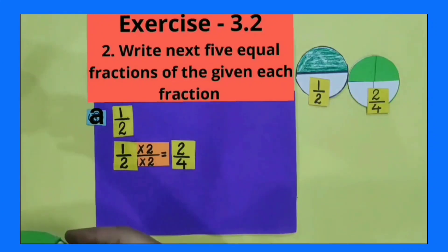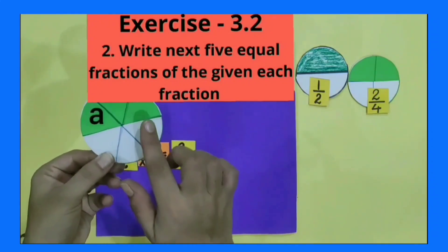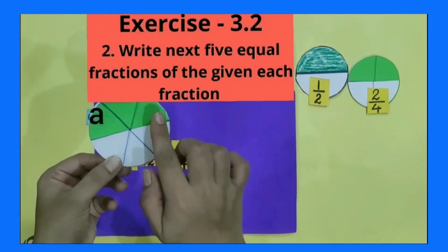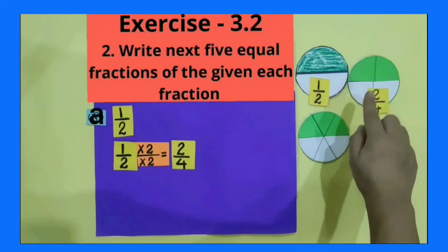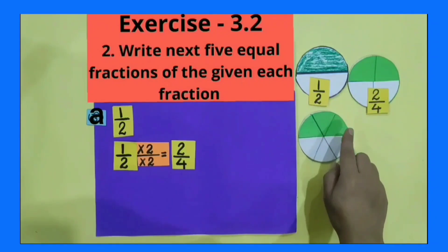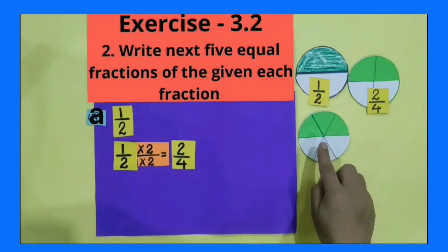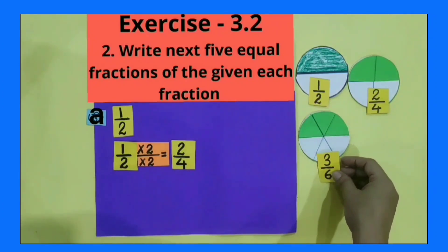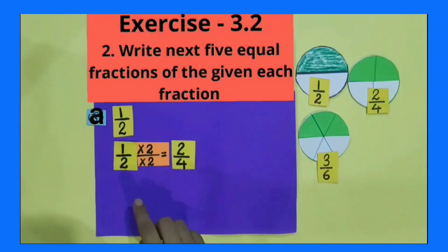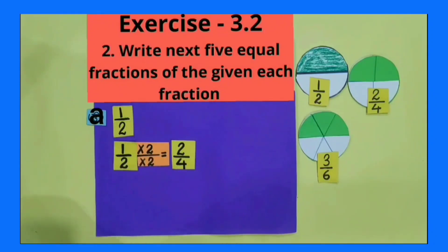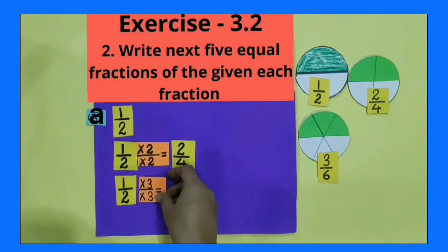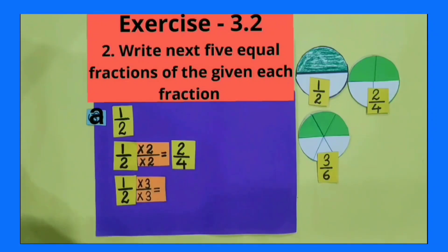I have a circular shape which is divided into 6 equal parts, out of which 3 parts are colored. Compare these 3 circular shapes — are these shapes equivalent to each other? Yes, these shapes are equivalent to each other. 3 parts out of 6 equal parts means 3 by 6. Tell with which number will I multiply 1 by 2 to get 3 by 6? Yes, with number 3. 1 by 2 multiplied by 3 by 3 is equal to 3 by 6.